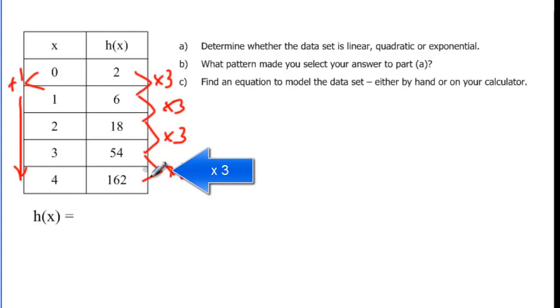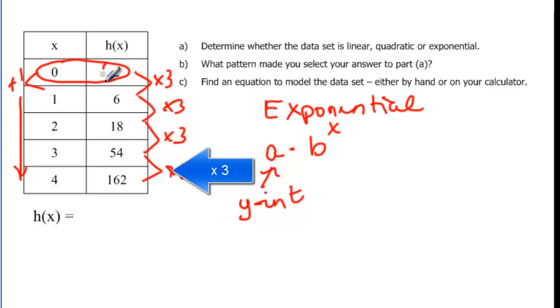So I can see that this one, since I'm multiplying a consistent amount every time, this one is exponential. In exponential functions we need an a times b to the x. Remember this one is our y-intercept. Well, do we have a y-intercept? We do because we had the x equals zero. Again, our y-intercept in this case, a, is equal to two.